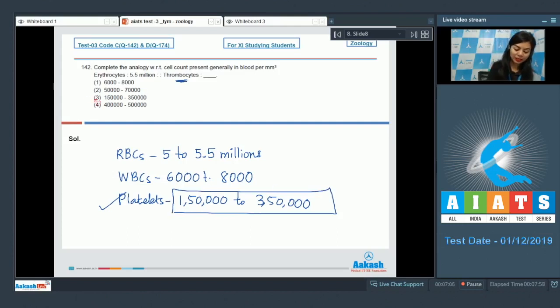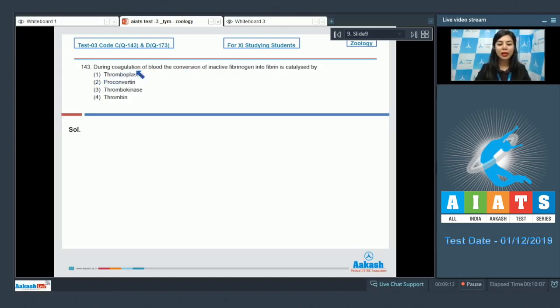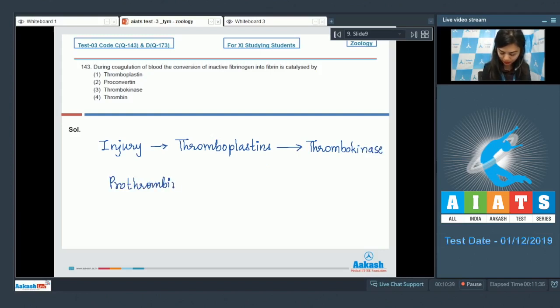Question number 143: During coagulation of blood, the conversion of inactive fibrinogen into fibrin is catalyzed by thromboplastin, proconvertin, thrombokinase, or thrombin? Whenever there is an injury or a trauma, the tissues at the site of injury would release something called tissue thromboplastins. These thromboplastins would help in the formation of an enzyme known as thrombokinase. Thrombokinase is required for conversion of prothrombin into thrombin.